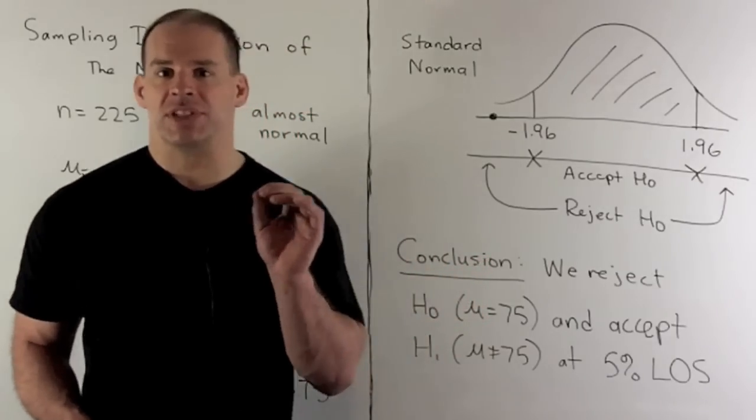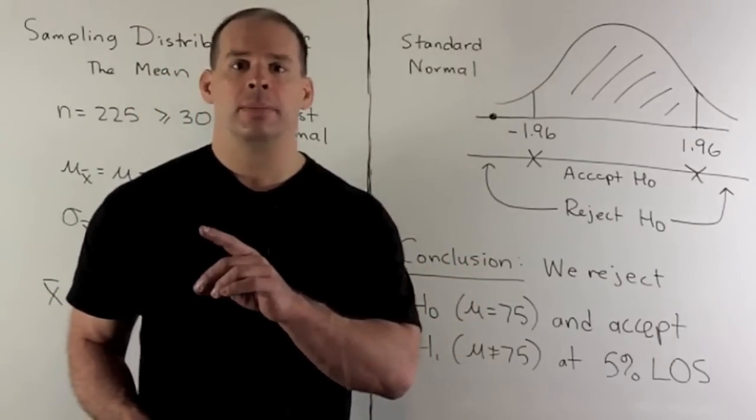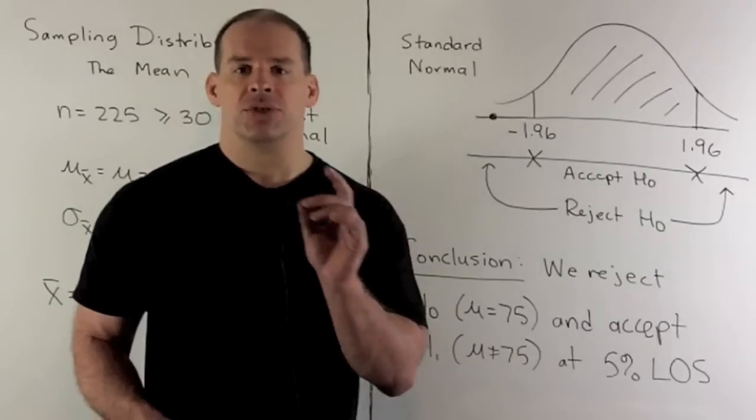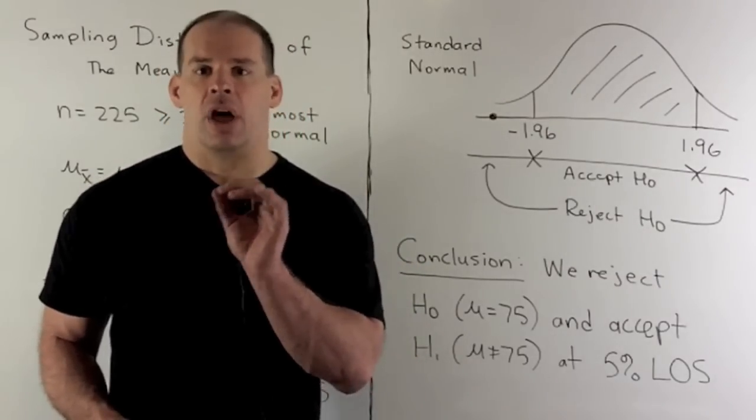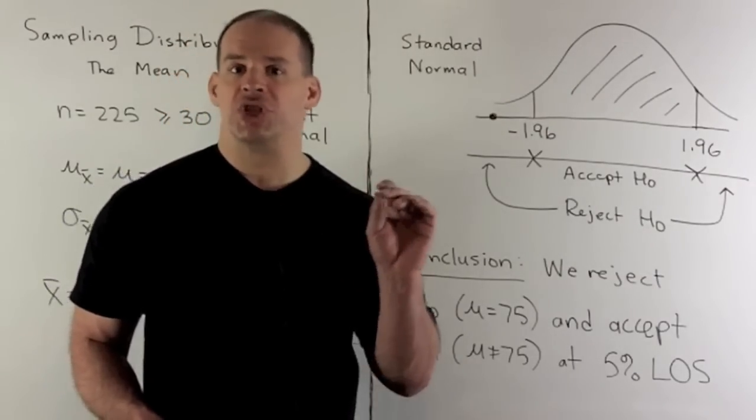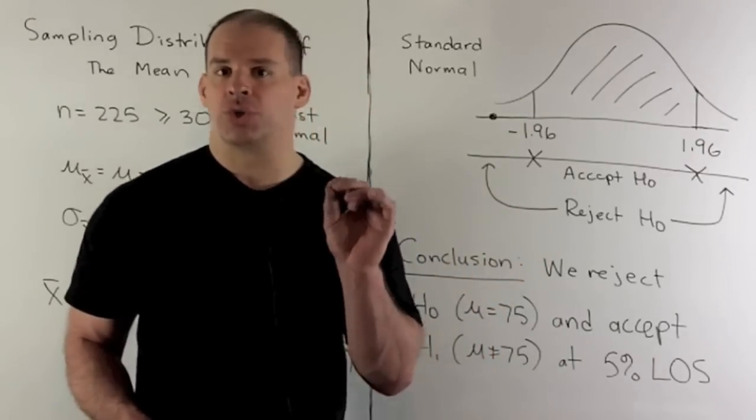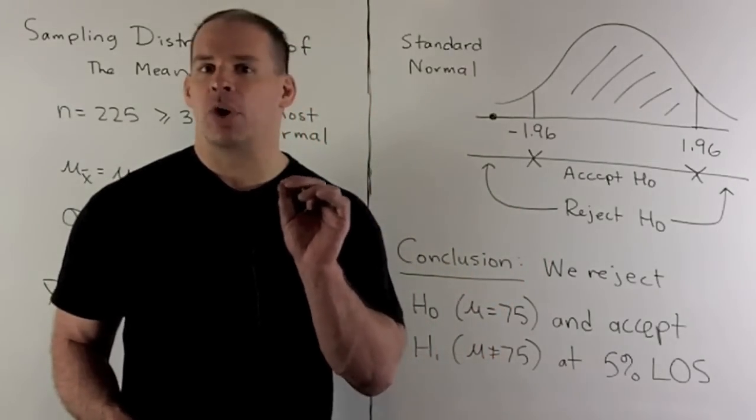Now the 5% level of significance, just recall, that's the percent chance of making a type 1 error. So that means the null hypothesis is true, but we reject it anyway. Note in this case, we don't know whether it's true or not. We would actually have to go back, compute the mean for the population.